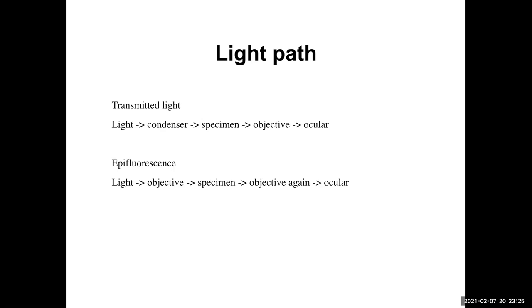Now, if we're talking about the light path of transmitted light — usually bright field of some sort, including phase and DIC — versus the light path of epifluorescence, also a reflected or incident light, the light path is different. For transmitted light, the light starts out at the bulb, goes through the condenser, through your specimen, to the objective, and then out to the ocular and cameras.